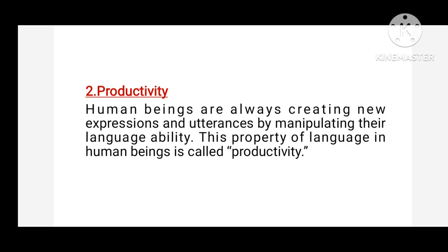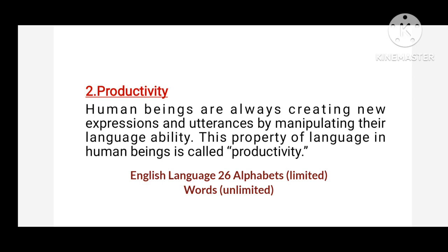The second property is productivity. Productivity means creativity, because human beings are always creating new expressions and utterances by manipulating their language ability. For example, the English language has 26 alphabets, but out of these 26 alphabets, human beings are able to make unlimited words and expressions.